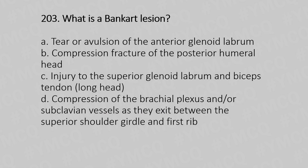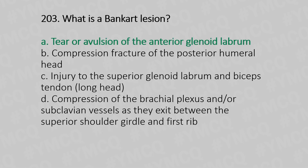Question 203: What is a Bankart lesion? Option A: Tear or avulsion of the anterior glenoid labrum. Option B: Compression fracture of the posterior humeral head. Option C: Injury to the superior glenoid labrum and biceps tendon. Option D: Compression of the brachial plexus and subclavian vessels as they exit between the superior shoulder and the first rib. The answer is Option A: Tear or avulsion of the anterior glenoid labrum.